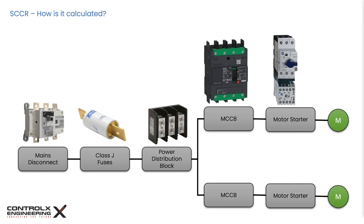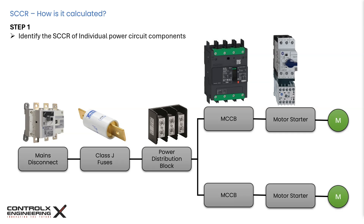Consider this simple circuit diagram. Power enters the control cabinet through the mains disconnect, then overcurrent protection fuses and power distribution blocks distribute incoming power to two branch circuits. Each branch is protected by a breaker, and motor starters control the two load motors. For Step 1, power circuit components are generally required to have short circuit ratings published, with certain components like voltmeters, EMI filters, and power resistors exempt per paragraph SB 4.2.1. SCCR values can be obtained from manufacturer labels, data sheets, or the default values in table SB 4.1, which lists standard default SCCR ratings for components that are not tested or marked.